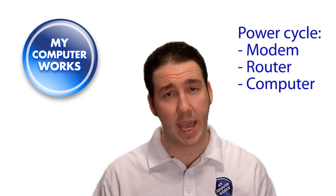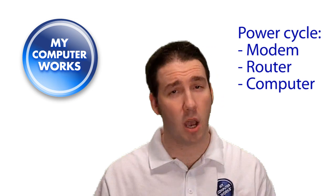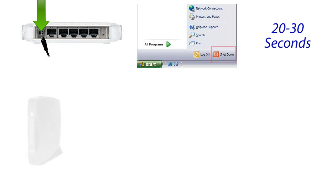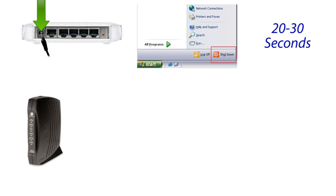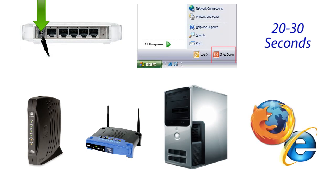If all lights look normal, you can proceed to power cycling the cable modem, router, and computer. Basically what this means is turning these components off and then back on again. On the modem and router, simply disconnect the power from both. Then shut down your computer. Give it about 20 to 30 seconds, then reconnect the power to the modem, wait about 30 seconds for all the lights to come on, then reconnect the power to the router, and turn on your computer. Give your computer a few minutes to completely start up, then try connecting to the internet.